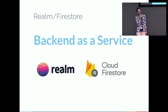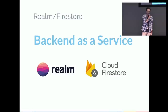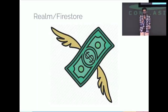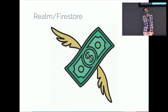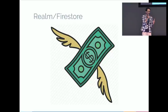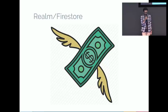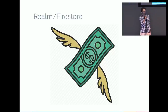Then you have Firebase Realtime Database or Google Cloud Firestore — backend as a service. It comes with reactive synchronization and offline support. But it takes your money way too fast. I built a small prototype when Firestore first came out about a year ago. I had some bad architecture or bad implementation, and it cost $20 for a two-week application. That's bad.